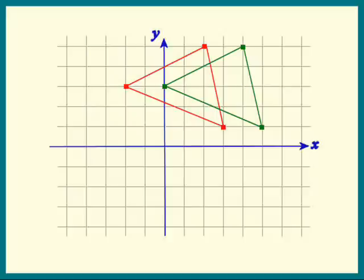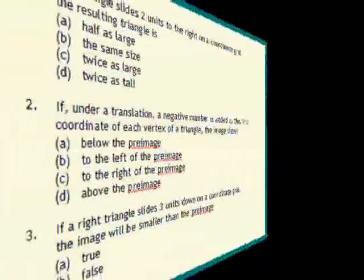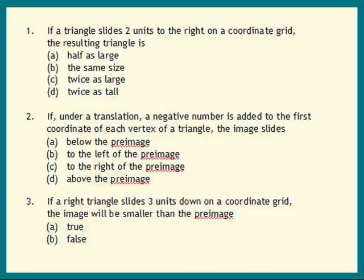Let's look at the second problem. It says if under a translation, the translation is also sliding, a negative number is added to the first coordinate of each vertex of a triangle.